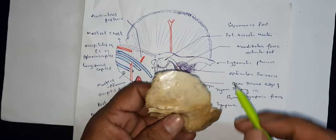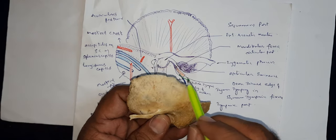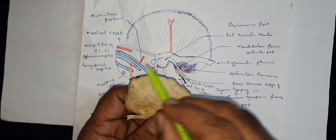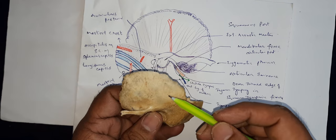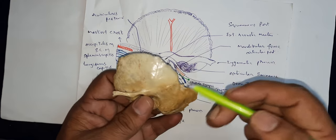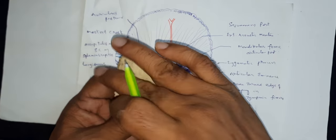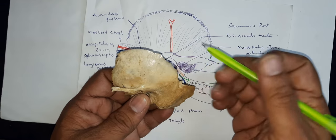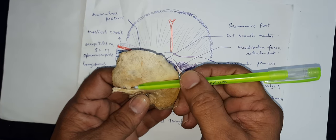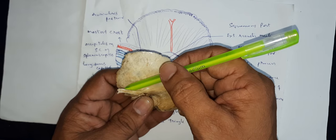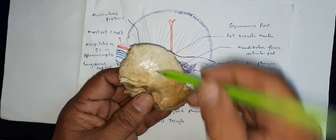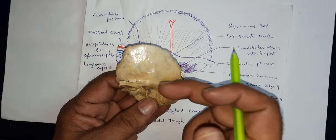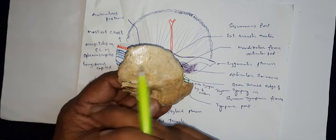This entire surface under the superior temporal lines, which are present on the parietal bone, gives attachment to the temporalis muscle — the entire surface. The temporalis muscle converges to a tendon which passes in front of the zygomatic arch and inserts on the coronoid process present on the mandible.